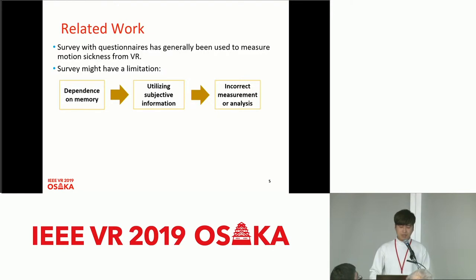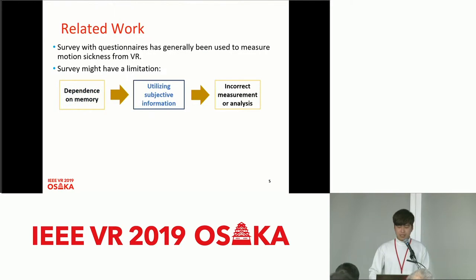In the past, a survey with questionnaires was the mainstream method to measure motion sickness. However, since a survey relies only on human memory, the information used might be subjective, which might lead to incorrect measurement or analysis.